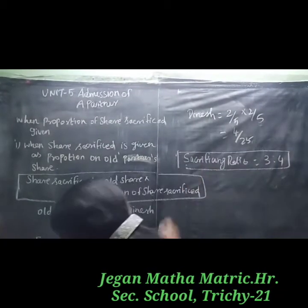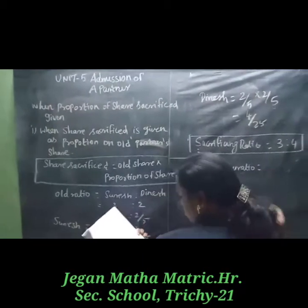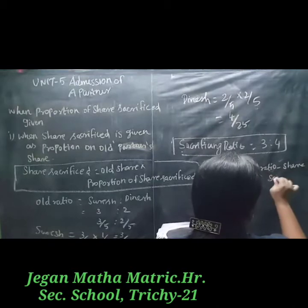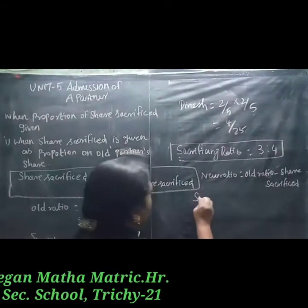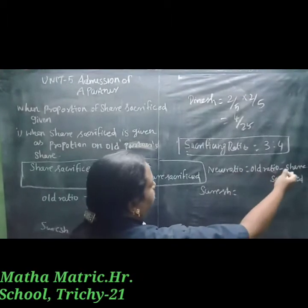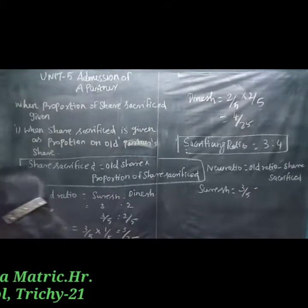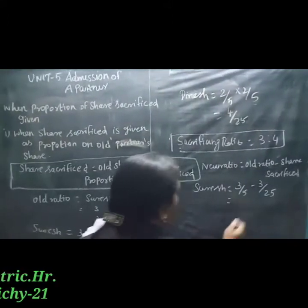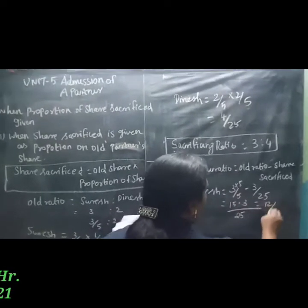Next, we find the new ratio. The formula is: new ratio equals old ratio minus share sacrifice. For Suresh: old ratio 3/5 minus share sacrifice 3/25. Finding the LCM of 25, we get 15/25 minus 3/25 equals 12/25. Suresh's new ratio is 12/25.